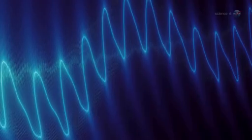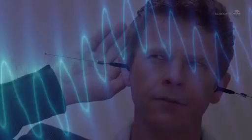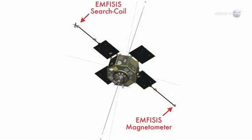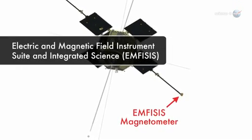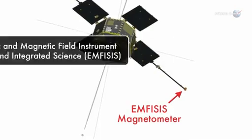This is what the radiation belts would sound like to a human being if we had radio antennas for ears, says Kletzing, whose team at the University of Iowa built the EMFISIS, Electric and Magnetic Field Instrument Suite and Integrated Science Receiver, used to pick up the signals.